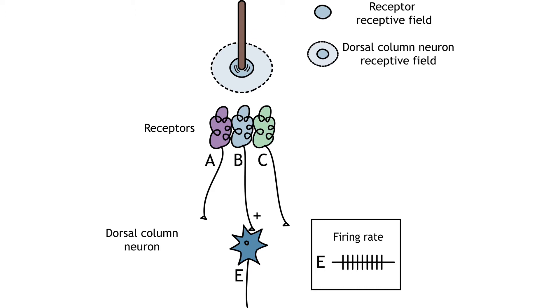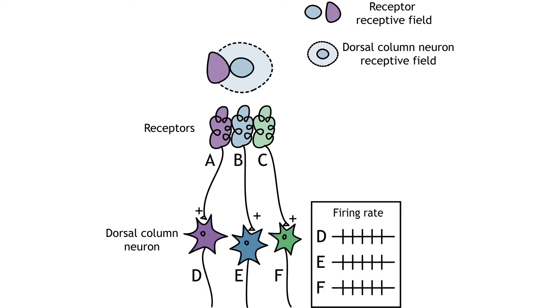The center-surround structure is like that of bipolar and ganglion cells in the vision system. As we just saw, when a stimulus touches the center of a receptive field, in this image the purple field, the dorsal column neuron will fire. However, the stimulus is also located in the surround of the receptive field for the blue cell E.